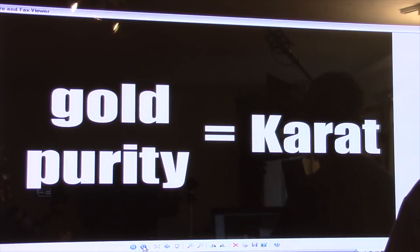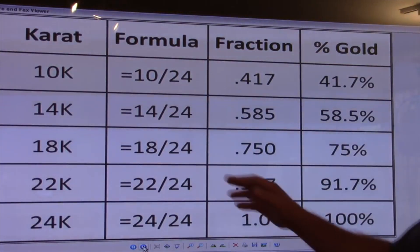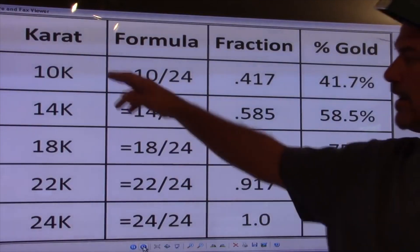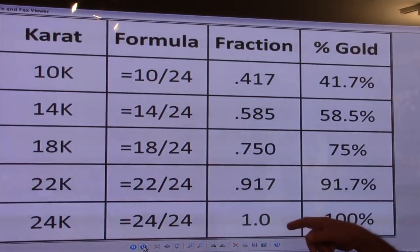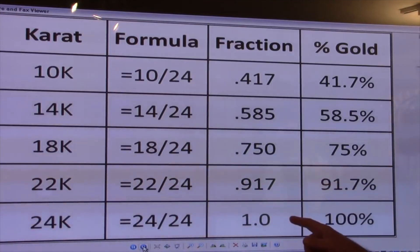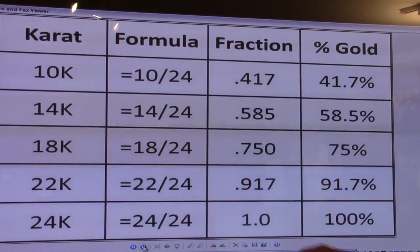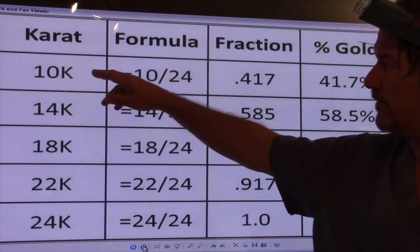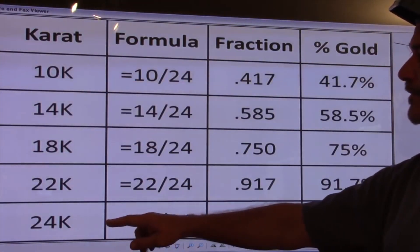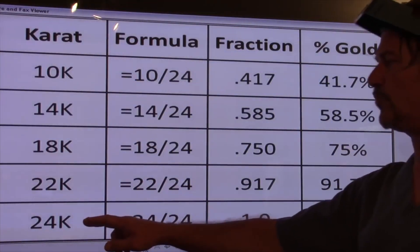Now on this chart, what we have is the United States method for measuring gold, and then we have the European or the rest of the world's method for measuring gold, or the universal method really. So this is base 24, and this is what we expect to see when jewelry is made for the United States audience.